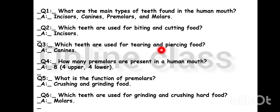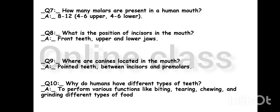Which teeth are used for tearing and piercing food? Canines are used. The function of premolars is crushing and grinding food. The incisors are positioned as the front teeth, upper and lower. The canine is located between the incisors and premolars.